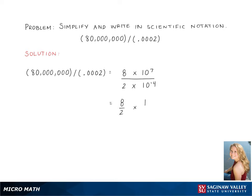Now we divide the coefficients and then the exponents. This gives us 8 divided by 2, which is 4 times 10 to the 11th, because we just subtract the exponents. This is our final answer.